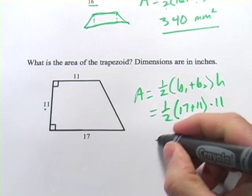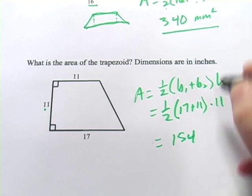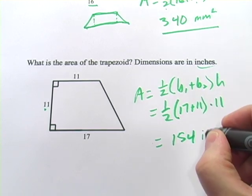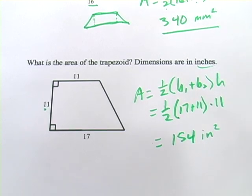That should be 154. Units were inches. This is area, so that's square inches. So, that is how to calculate the area of a trapezoid.